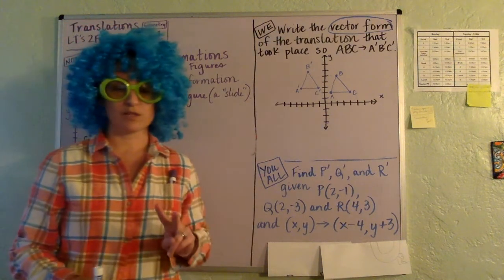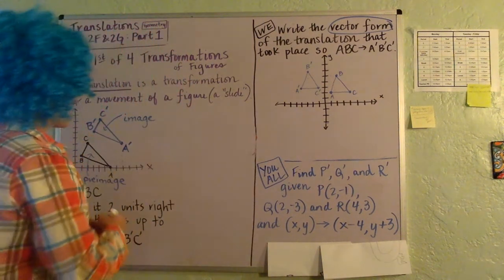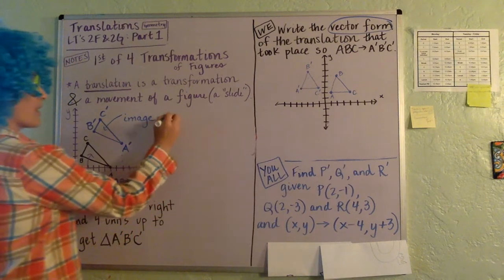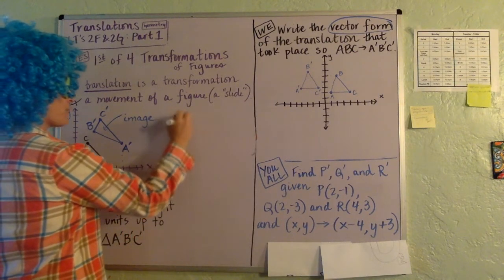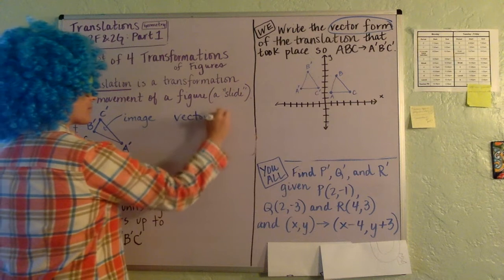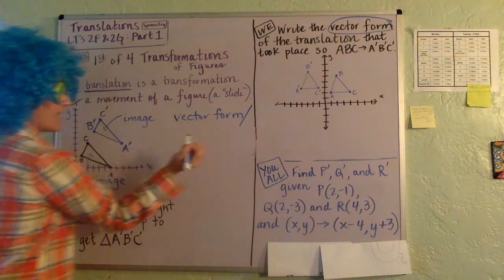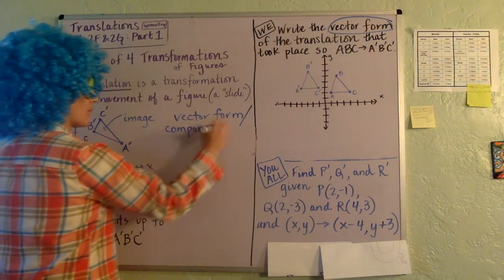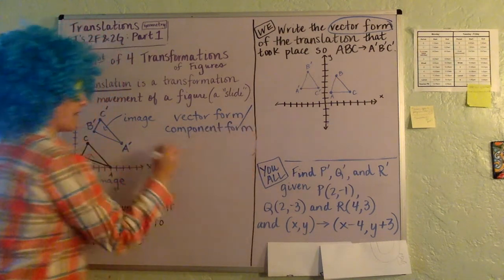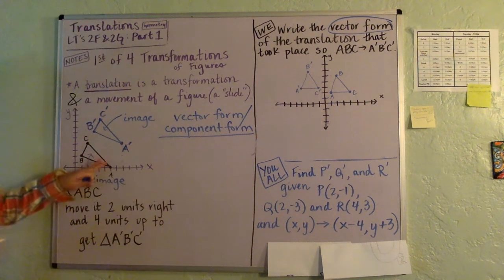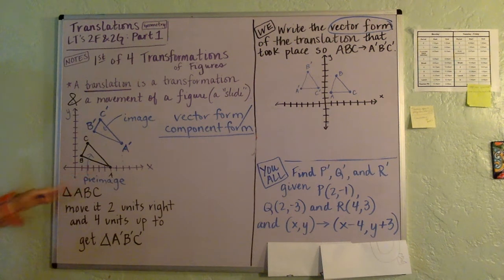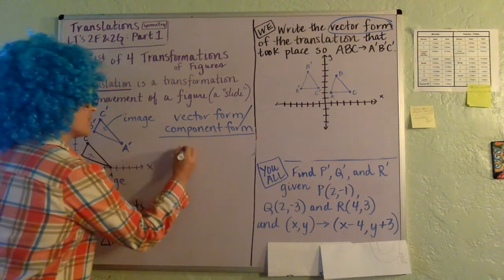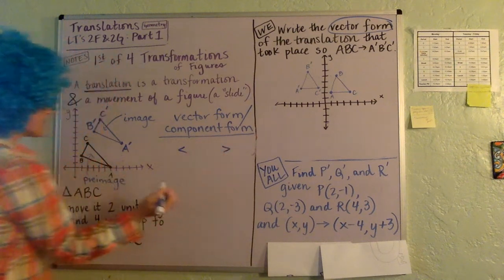Now there's two different ways we can talk about this slide, okay? The first one is, let's see, we'll use our vector form, okay? Also sometimes called component form, okay? And to indicate, just using the example we just talked about here, where we slid two to the right and four up, you use these vector symbols.